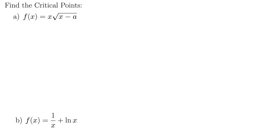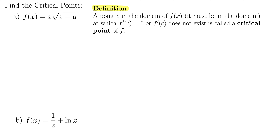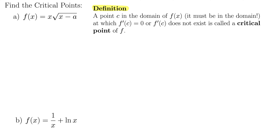Here we have two examples of finding the critical points. The first one is f of x equals x times the square root of x minus a. Before we get too far into this, let's review what critical points are. We're looking for a point C that has to be in the domain of f of x, at which the derivative is zero or the derivative does not exist.